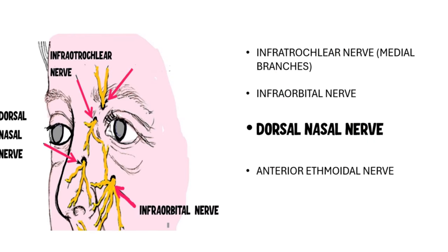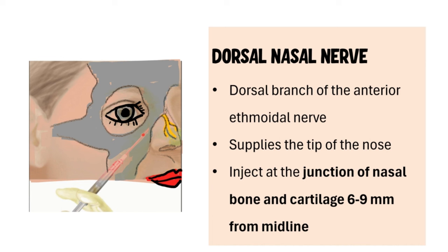Moving on to the dorsal nasal nerve — this is a dorsal branch of the anterior ethmoidal nerve and innervates the tip of the nose. To block this nerve, one injects the drug at the junction of the nasal bone and the nasal cartilage, about 6 to 9 mm away from the midline.